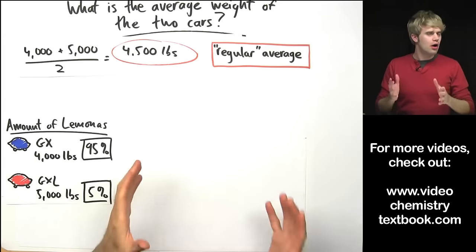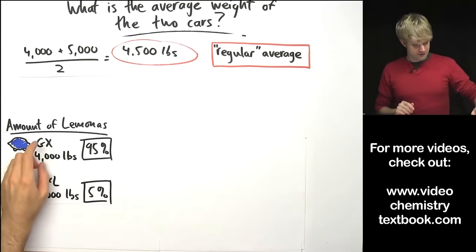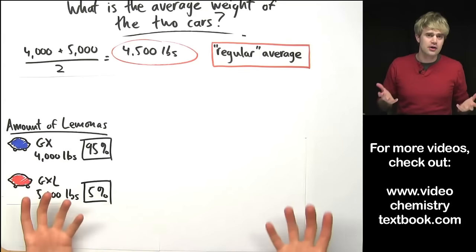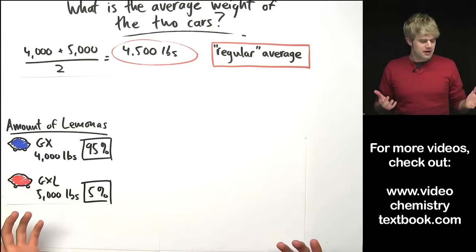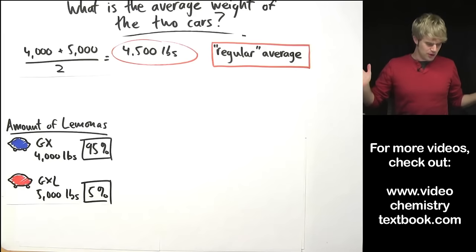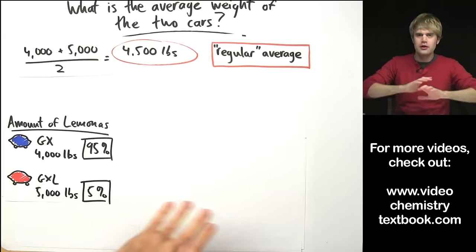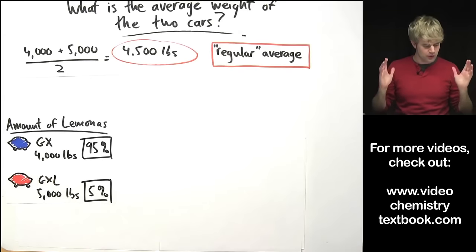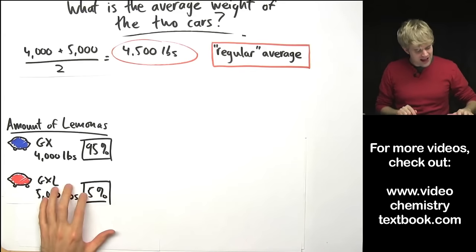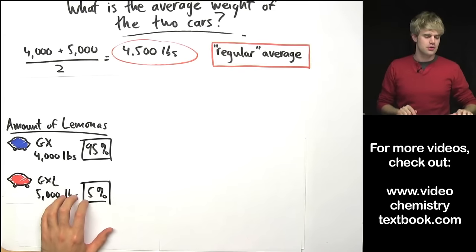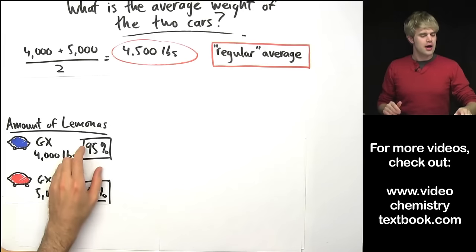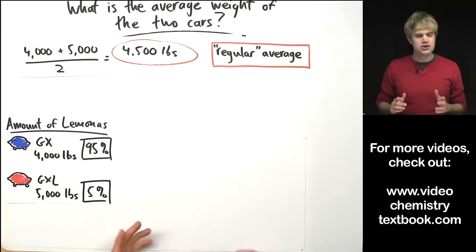Let's say that there aren't the same number of GXs and GXLs out there. Maybe because the GXL is a little bit more expensive, there are a lot fewer of them. So if we look at all the Lamonas that have been sold everywhere, only 5% of them are GXLs whereas the vast majority, 95% of them are GXs.